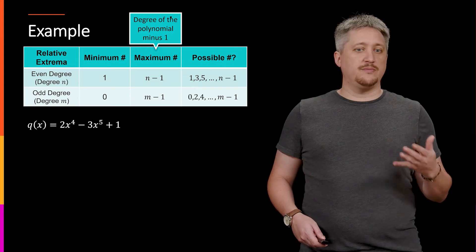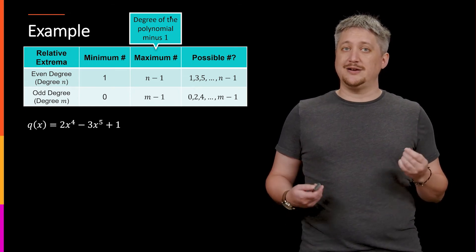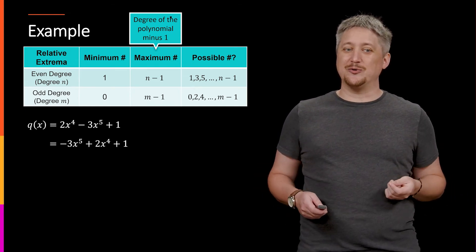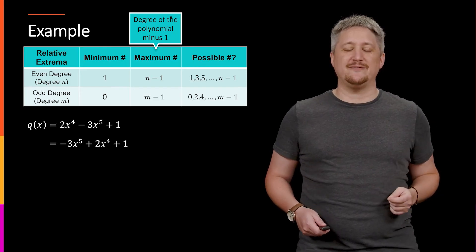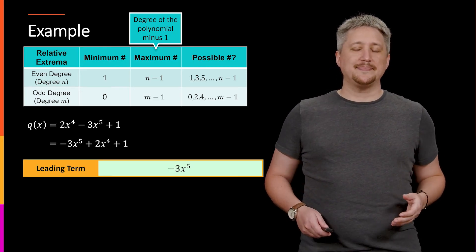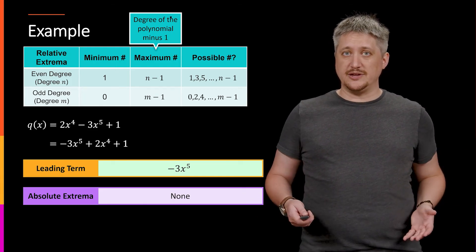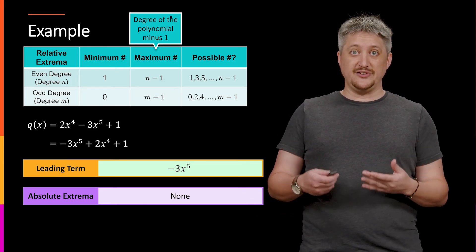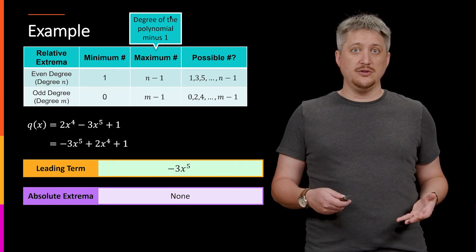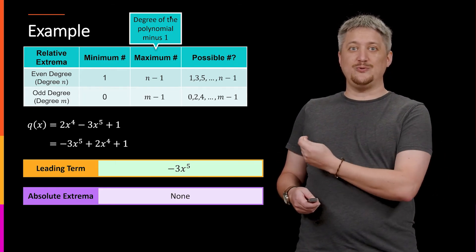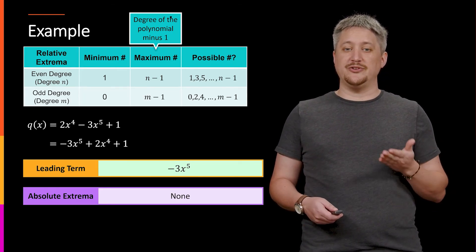So as another example, 2x to the fourth minus 3x to the fifth plus 1. Again, make sure to rewrite it in the right order. So I have negative 3x to the fifth. That's my leading term. Again, since this is now odd, I have no absolute extrema, which means that I'm starting at 0 as a possible local, and then adding 2 repeatedly until I get up to the degree minus 1.